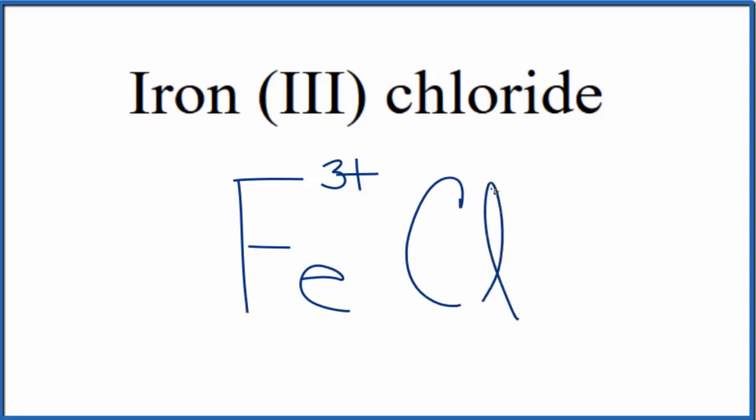And chlorine on the periodic table, that's in group 17, sometimes called 7A. It has a 1 minus ionic charge. Since iron chloride,